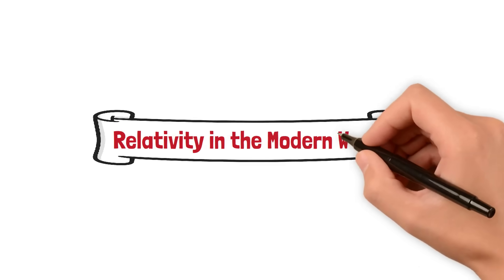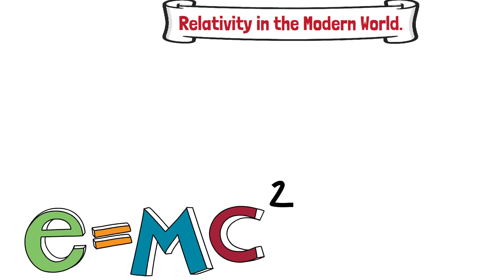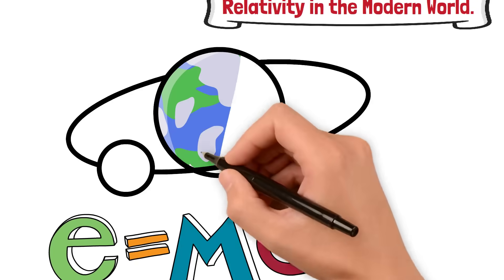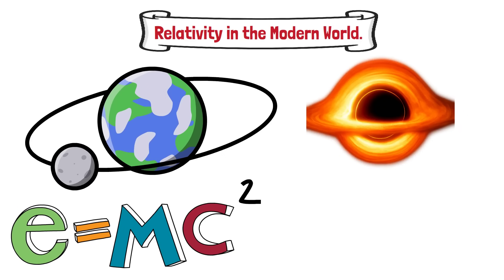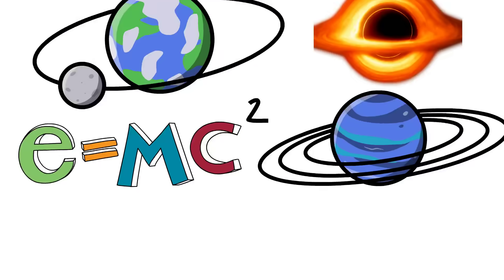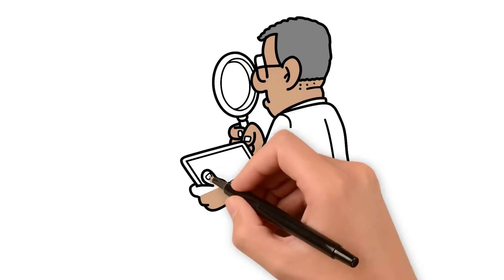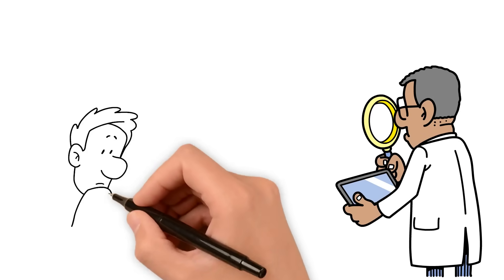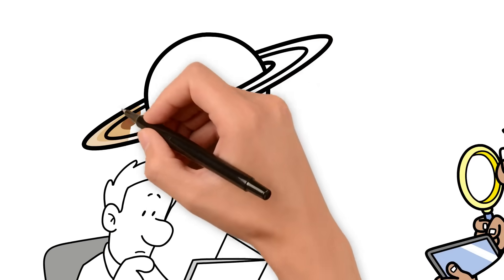Relativity in the modern world. Einstein's equations don't just describe planets, they describe everything that bends space-time, from black holes to the expansion of the universe itself. They're essential to astrophysics, helping scientists simulate the formation of galaxies, study gravitational waves, and map the invisible dark matter shaping the cosmos.